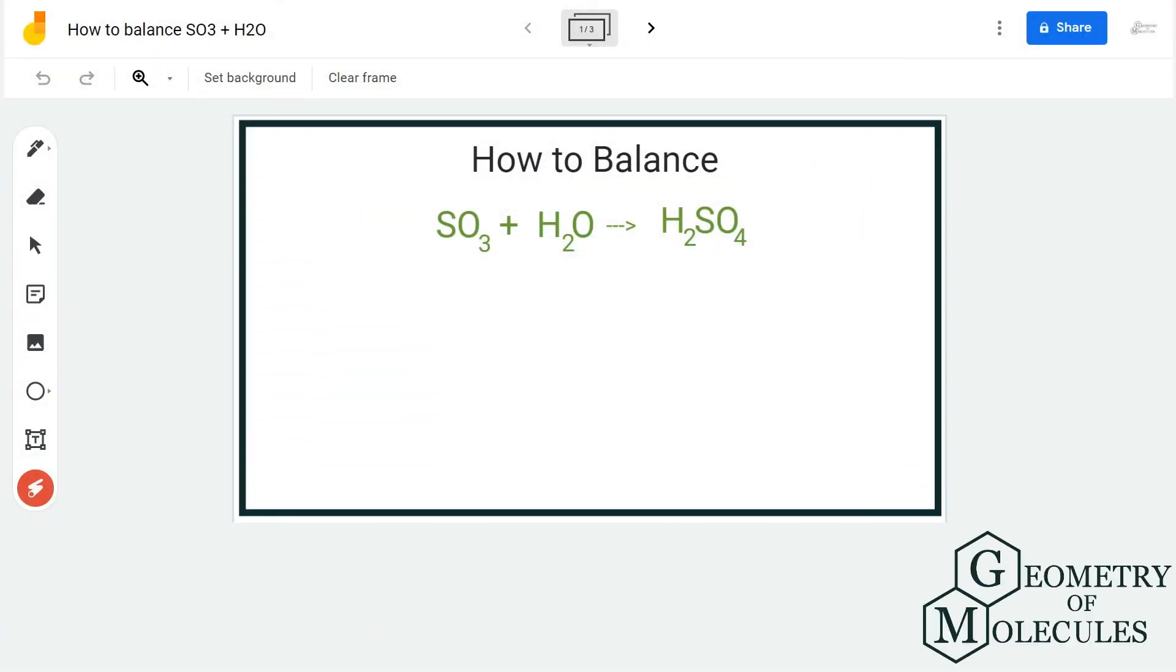Hi guys, today in this video we are going to balance this equation. We have SO3 plus H2O on the reactant side and H2SO4 on the product side. To check if this equation is balanced or not, we are going to consider the number of atoms on both sides.